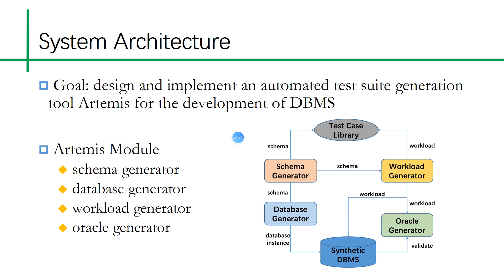In this part, I will introduce the system architecture of Artemis. Our goal is to design and implement Artemis, an automated workload generation and verification tool that serves database functional testing, including data generation, workload generation, and result verification. It can build a complete test suite while automatically generating a lot of test cases and automatically verifying the correctness of the test cases. Artemis mainly contains four modules: schema generator, database generator, workload generator, and oracle generator. Test case library can store test cases for repeated testing.